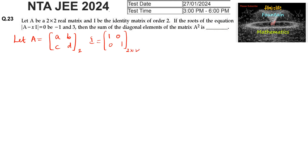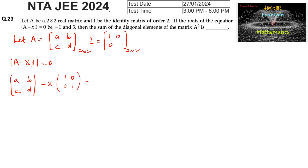We compute det(A − xI) = 0. That is, det of [[a, b], [c, d]] minus x·[[1, 0], [0, 1]], which equals det of [[a−x, b], [c, d−x]] = 0. This gives (a−x)(d−x) − bc = 0.